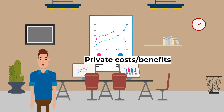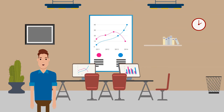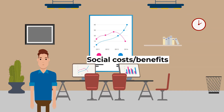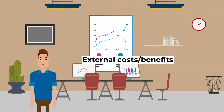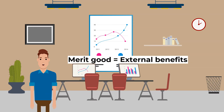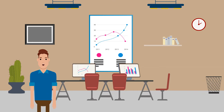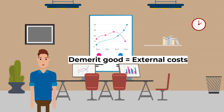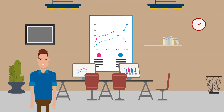Private costs and benefits are the costs or benefits to the individual participating in the economic activity. The demand curve represents private benefits and the supply curve represents private costs. Social costs and benefits are the costs or benefits of the activity to society as a whole. External costs and benefits are the costs or benefits to a third party not involved in the economic activity; they are the difference between private costs and benefits, and social costs and benefits. A merit good is a good with external benefits, where the benefit to society is greater than the benefit to the individual — these goods tend to be under-provided by the free market. A demerit good is a good with external costs, where the cost to society is greater than the cost to the individual — they tend to be over-provided by the free market.